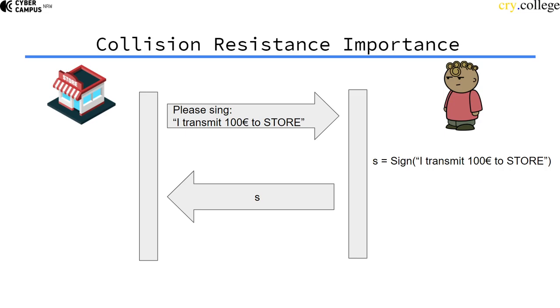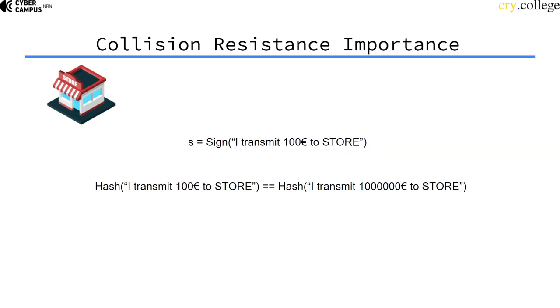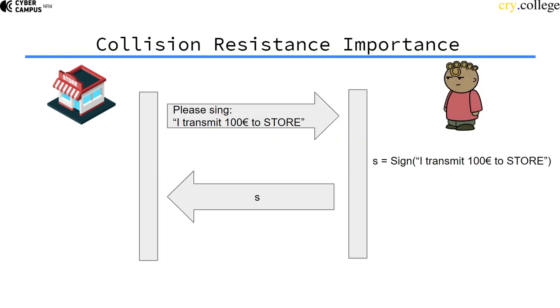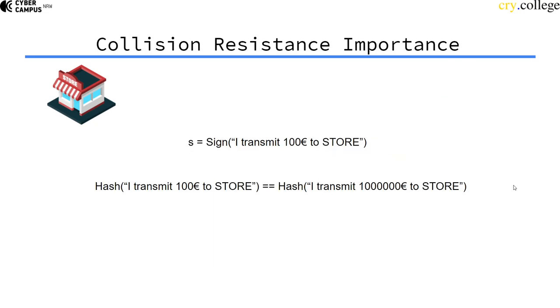Well, this was problematic because if the underlying hash function of the signature scheme is not collision resistant, what the store could have done is find a collision—find two messages that hash to the same value. And because you have signed one of the messages, the store owner can now just swap the messages with the other message that hashes to the same value because he found a collision.